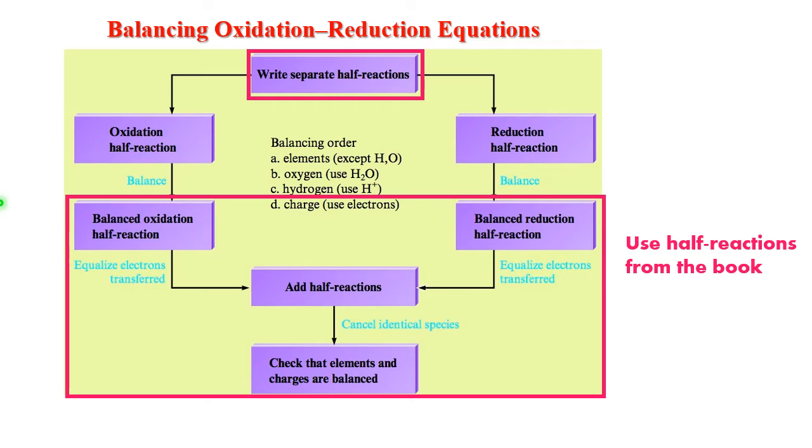So how to balance the whole oxidation-reduction reaction? We are starting with half-reactions, so write separate half-reactions. Instead of balancing them yourself, use half-reactions from your book. You have balanced oxidation half-reaction, balanced reduction half-reaction. You equalize electrons transferred and add half-reactions. The resulting reaction should have no electrons.